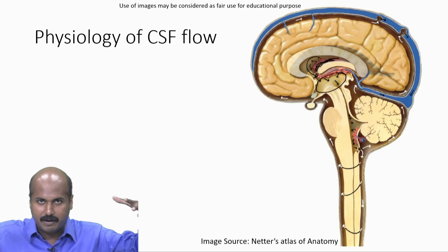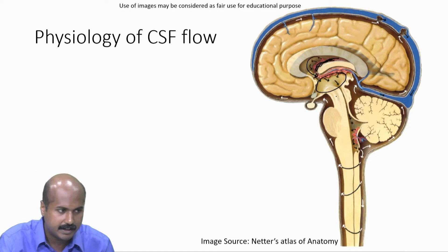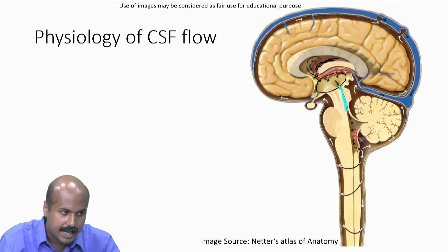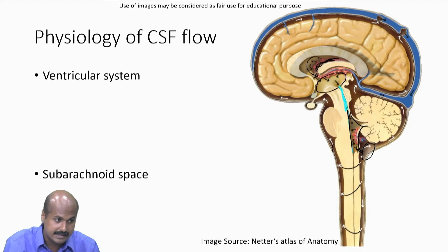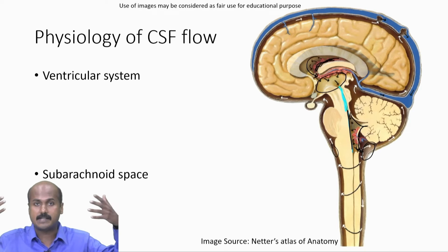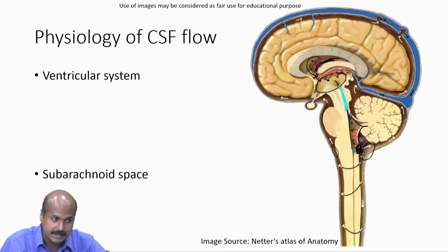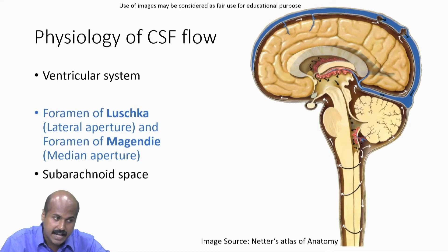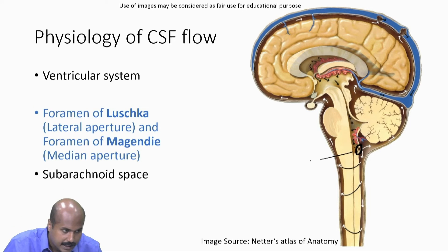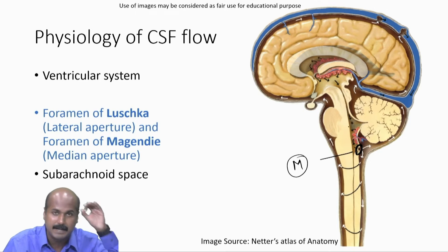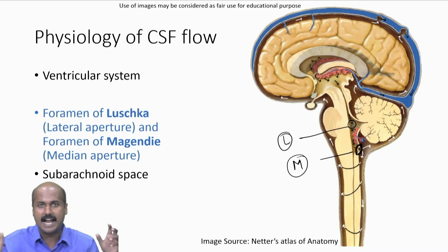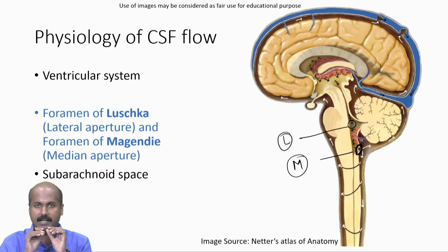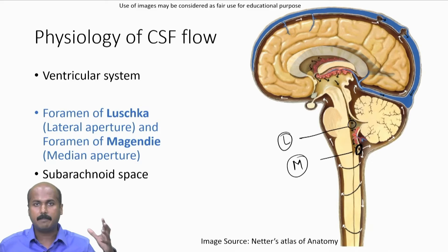The CSF flows from the lateral ventricles through the two foramen of Monroe into the third ventricle, then through the aqueduct of Sylvius into the fourth ventricle. From the fourth ventricle, CSF drains into the subarachnoid cisterns and into the subarachnoid space through three communications: the foramen of Magendie in the midline and the two lateral foramen of Luschka — two lateral apertures and one midline aperture.